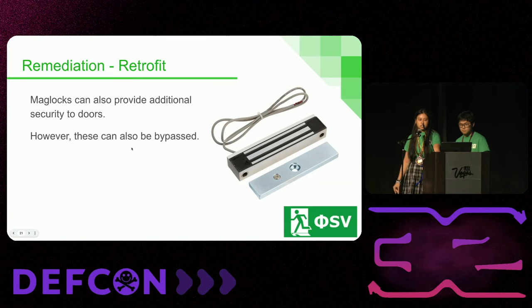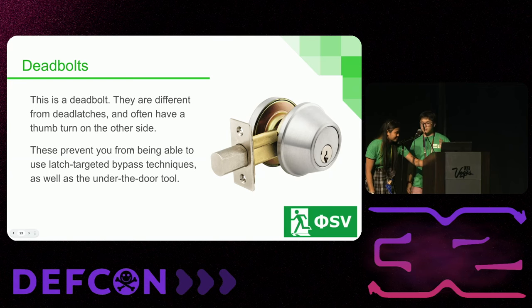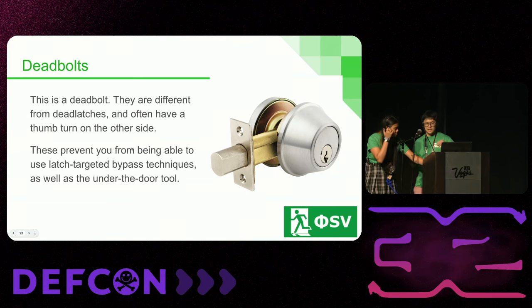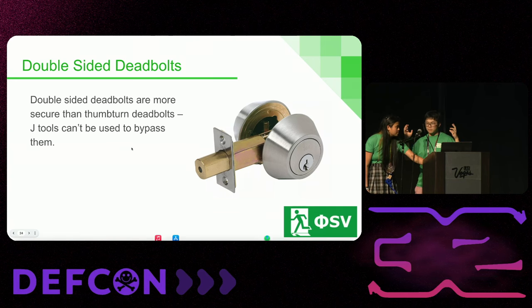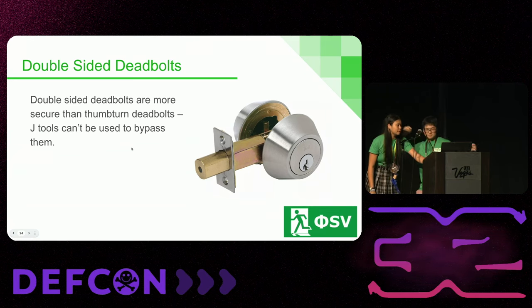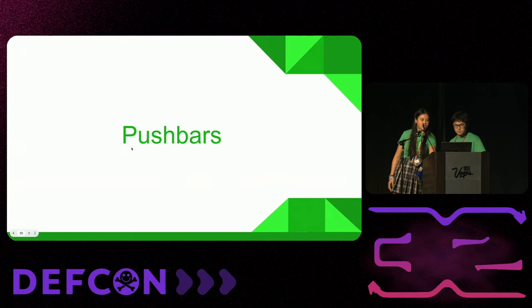Mag locks can also provide additional security, but again these can also be bypassed. Deadbolts are different from dead latches and have a thumb turn on the other side. The best way of remediating this is to have a double-sided deadbolt — basically you don't have that thumb turn on the other side. This prevents you from using J-tools to bypass it. In exchange for security you are losing a bit of convenience, but in certain facilities it is worth that exchange.